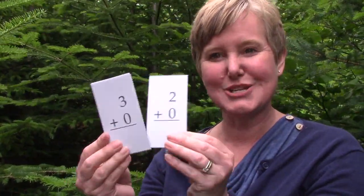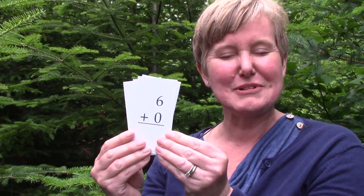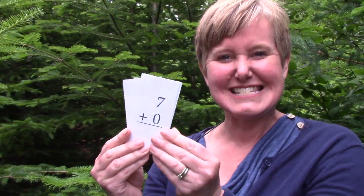Two plus zero is two. Three plus zero is three. Four plus zero is four. Five plus zero is five. Six plus zero is six. Seven plus zero is seven. Eight plus zero is eight. And nine plus zero is nine.